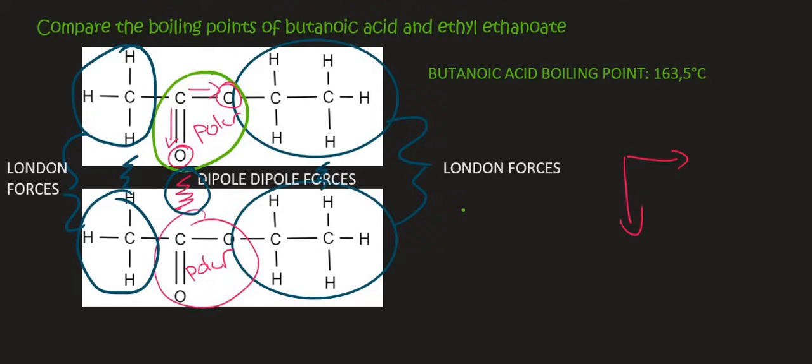And so the boiling point of ethyl ethanoate will be lower than butanoic acid. So let me quickly find that on Google. And so there we have it. The boiling point of ethyl ethanoate is only 77.1 compared to butanoic acid, which was more than double. And that is due to the presence of those hydrogen bonds. That's all for this video. Thank you for watching.